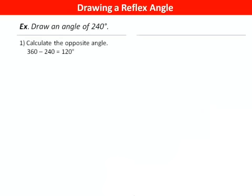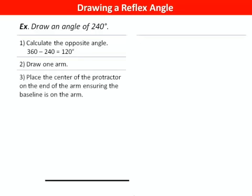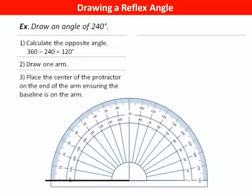Let's look at it step by step. First, we calculate the opposite angle by subtracting the reflex angle from 360. Next, draw one of the arms. Place the center of the protractor on the end of the arm, making sure the arm is on the baseline.